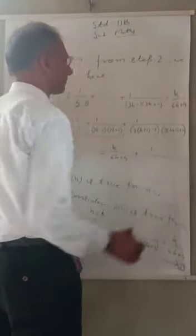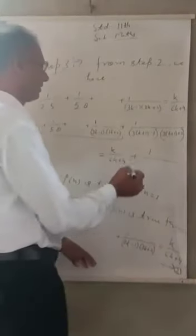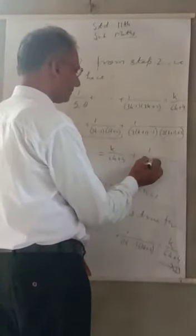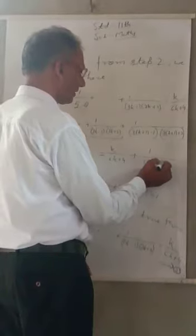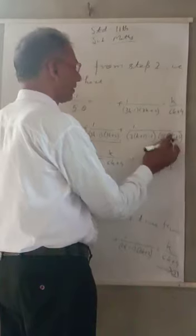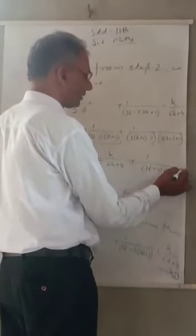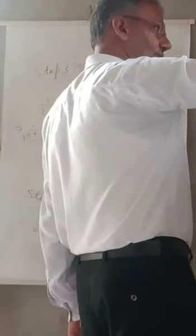Pay attention please. 3k+3 becomes what? 3k+2. Very nice. 3k+3+2 equals 3k+5. Three times (k+1) plus 2 gives 3k+5.